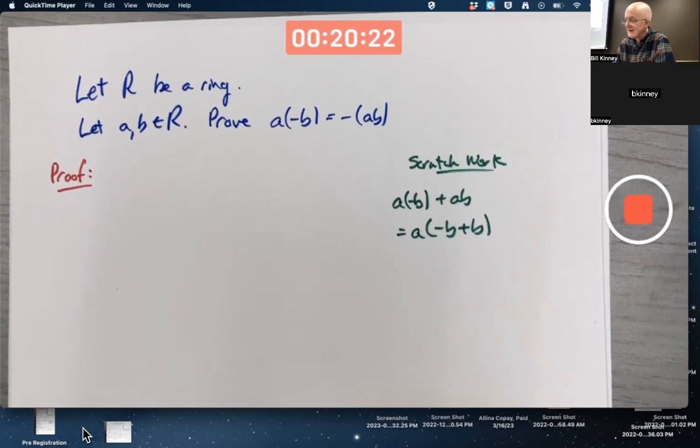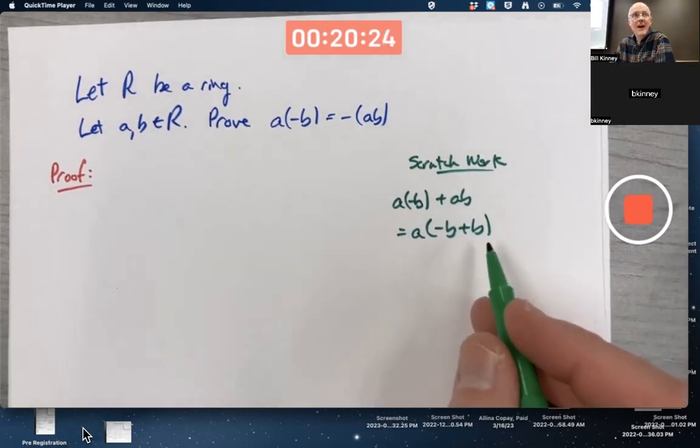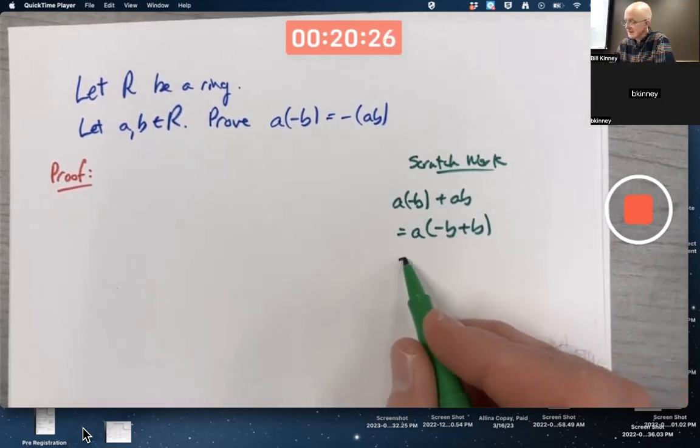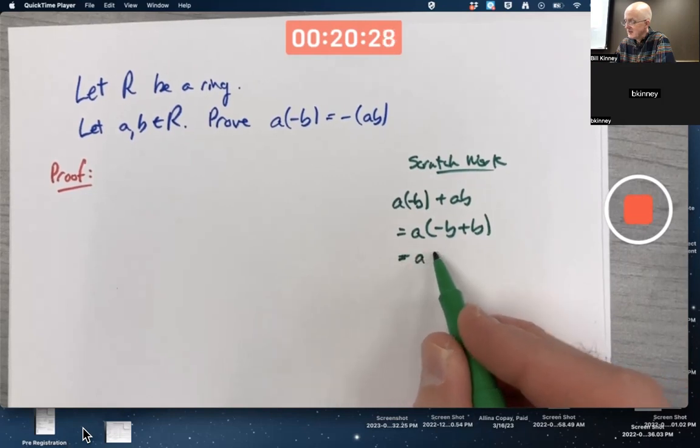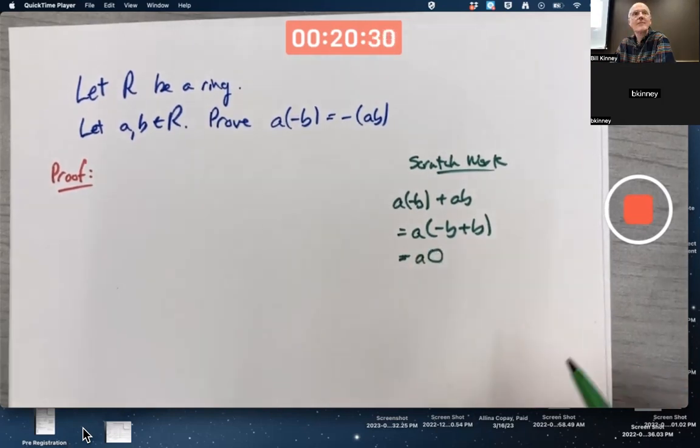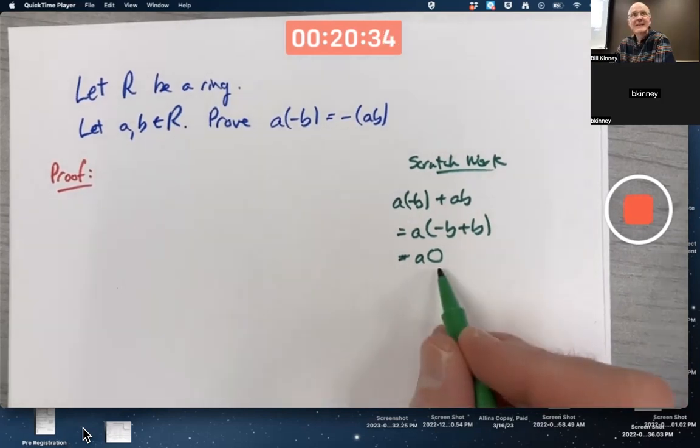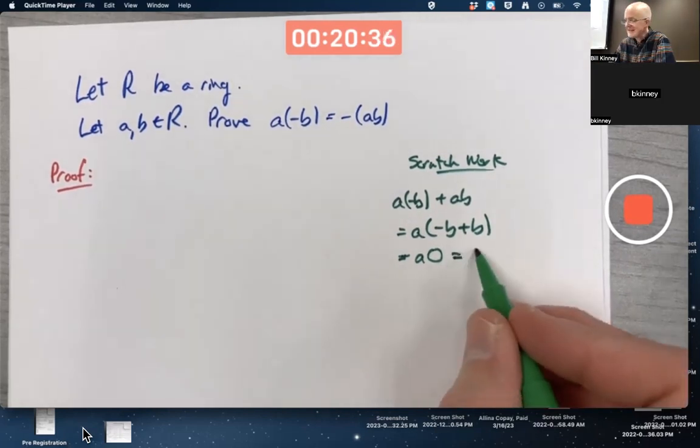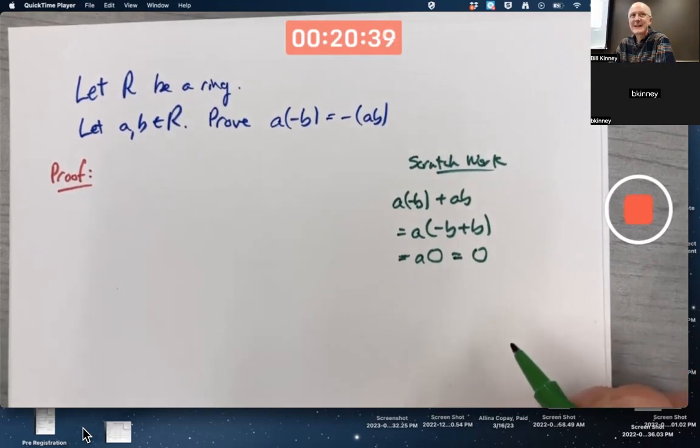And then B and negative B are additive inverses. So negative B plus B is zero. And hey, that's the thing that we tried to prove with zero last time. And then eventually, with a little bit of looking at the book, we got that it was zero.